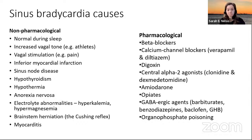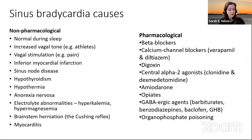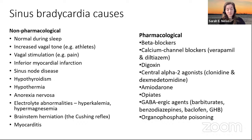Usually when I think about sinus bradycardia, it's one of two things: either the patient is young and very athletic (which is why we see a low heart rate), or we did it to the patient by giving them something like a beta blocker. Those are the two main things. Other causes include tachy-brady type syndromes, hypothyroidism, underlying MI, electrolyte abnormality, and Cushing's response.